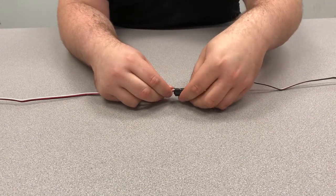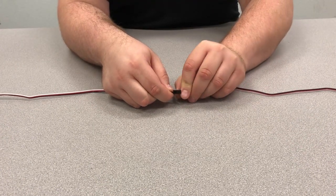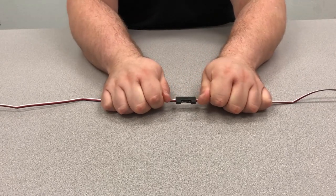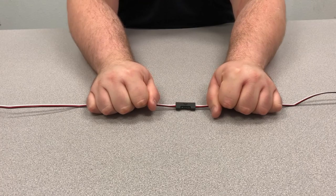For example, say I have a sensor on the end of my arm that I need to run an extension cable to. Well, all I have to do is slide the clip over the two connectors, and just like that they're locked together.